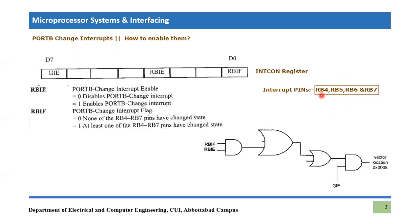So if any of these four pins goes to a change, that means they change their status from 0 to 1 or 1 to 0, then what is going to happen? Their interrupt flag will become high. RBIF is a bit which is present in INTCON register. This is the interrupt control register. So that flag will become equals to 1 whenever these interrupt pins receive a change.